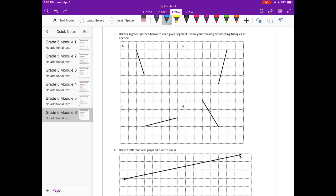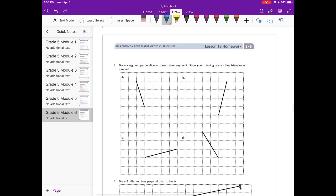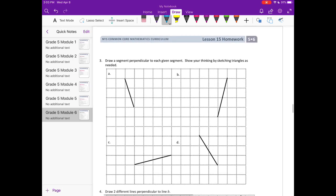Number three, draw a segment perpendicular to each given segment. Show your thinking by sketching triangles as needed. So what I'm going to do is just set my ruler, or your piece of paper, whatever you're using. I'm going to put it right up against that line. And then on the other side, I'm just going to draw a line. If you want to go ahead and connect it and make a triangle, you can do that too.